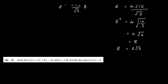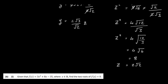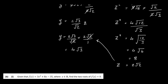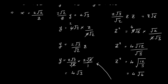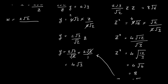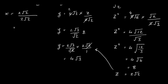Now I have z = 2√2, so I substitute back to find y. y = (2√3 / √2) × 2√2. The √2 cancels, and 2 × 2 = 4, giving y = 4√3. Then for x, we use x = 2√2 / z = 2√2 / 2√2 = 1. So x = 1, y = 4√3, and z = 2√2 are our three dimensions.